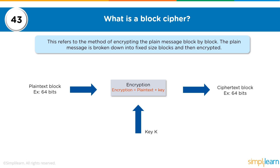Moving on: what is a block cipher? This refers to the method of encrypting a plain message block by block. The plain message is broken down into fixed-size blocks and then encrypted. A block cipher is normally used for data that is stored — for example, data stored on a hard disk that we want to encrypt. In this example, we have plain text which is 64 bits in size, and we add a layer of encryption using a key, producing scrambled, unreadable, encrypted data.